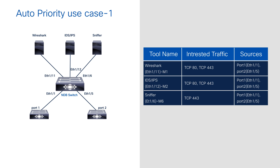Similarly, the second tool — the IDS/IPS tool — also needs ports 80 and 443, and its sources are also ports 1 and 2. The third tool, a sniffer, only needs port 443 traffic, and its sources are Ethernet 1/1 and 1/5. As you can see, the common criteria across all three are: common sources, overlapping filters — ports 80 and 443 overlap between M1 and M2, and port 443 overlaps across all three tools M1, M2, and M6 — and different tools.